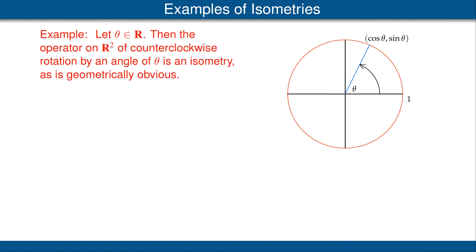Let's look at a family of examples of isometries on R2. Fix a real number theta. Then the operator on R2 of counterclockwise rotation by theta is an isometry. That's geometrically obvious because rotation does not change the norm of a vector. As you can see in the figure, if we rotate the point (1, 0) by an angle of theta counterclockwise, we get the point cosine theta, sine theta. In fact, this is the definition of the cosine and sine.